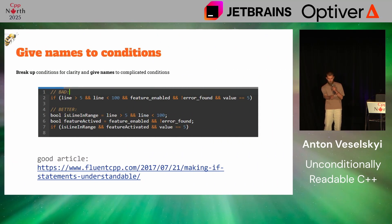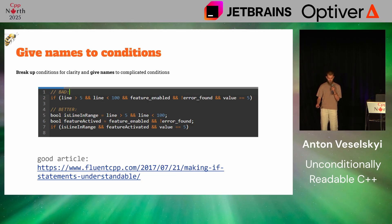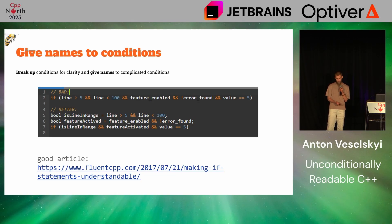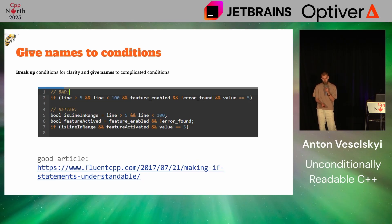Tip number one: give names to your conditions. So if you have a huge condition, it won't hurt to break it into simple ones and store them in boolean variables with clear names. That's the naming part. And then your if statement will read as a plain English sentence — if line is in range and feature is activated, we do something.